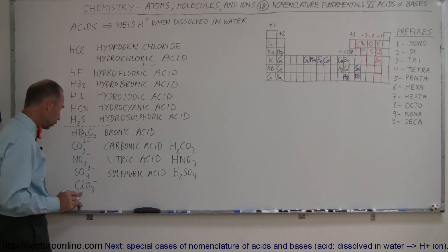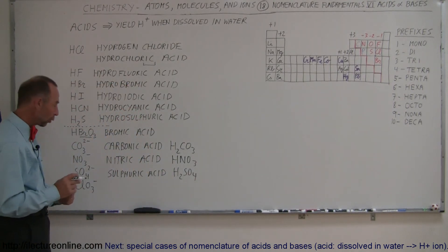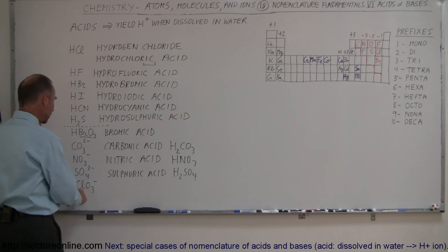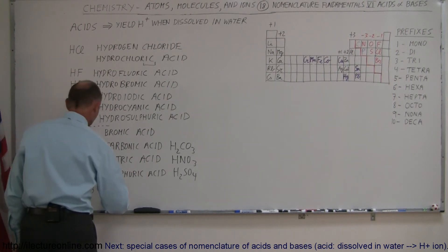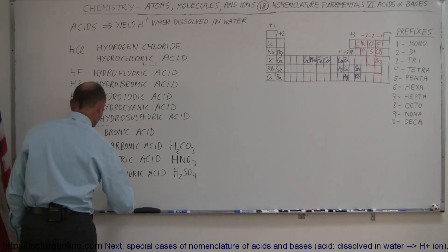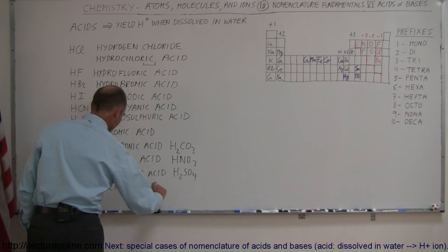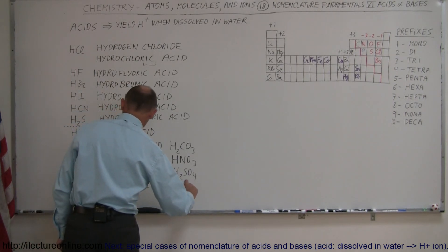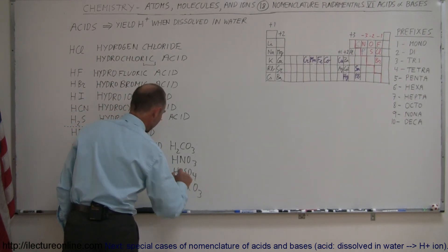Finally, we have the chlorate ion, so that becomes chloric acid. We add one hydrogen to it, so chloric acid is HClO₃.